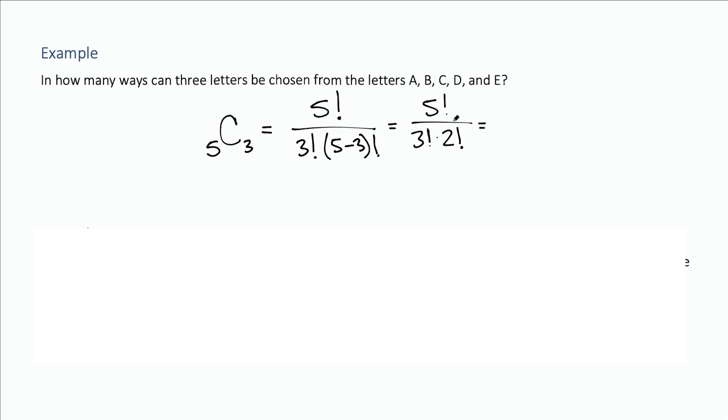And then we start to simplify. So five factorial, we'll expand that, and we'll stop at the next highest, which is the three factorial. Three factorial, and then two factorial, which is just two. And these three factorials cancel, and we get 20 over two, which is 10.